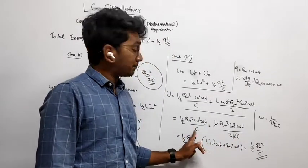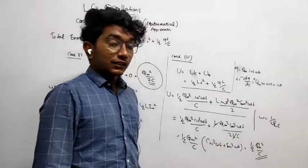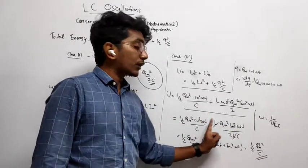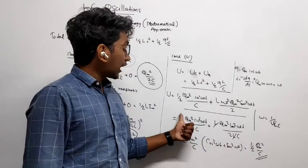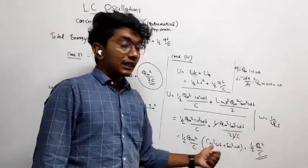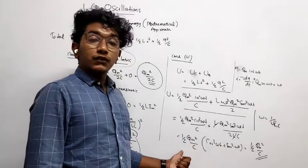Now this term is same, exactly same. Here is the important part. Now you check, this one and this one are same. Only difference is sine squared and cosine squared omega t. So you can take half Qm squared by C from outside. It will be cosine squared omega t plus sine squared omega t.